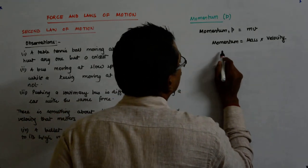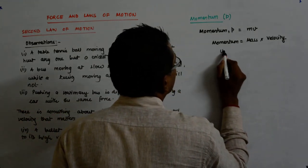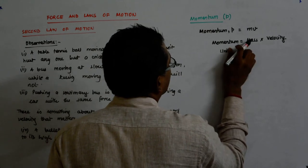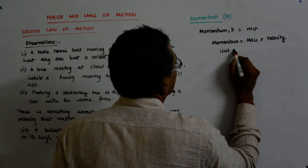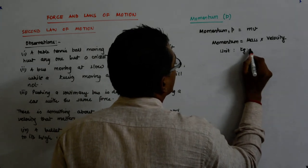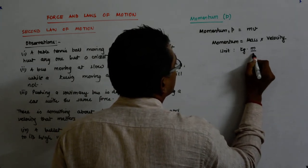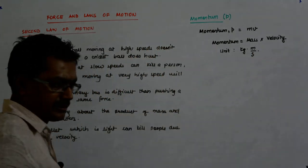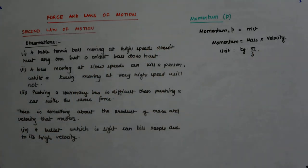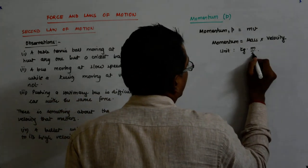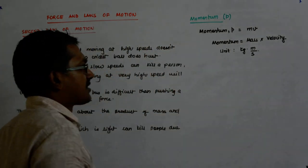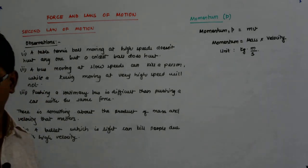And hence, what will be its unit? Its unit will be mass into velocity: kilogram meter per second. The unit of mass multiplied by the unit of velocity, that becomes the unit of momentum.